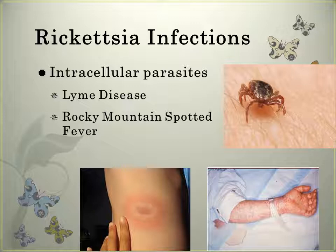Always encourage searching the body for ticks after being in a highly wooded or large grassy area. Rocky Mountain spotted fever has a gradual onset with fever, malaise, anorexia, and myalgia, or an abrupt onset with rapid temperature elevation, chills, vomiting, myalgia, and severe headache. The rash is primarily on the extremities, and you treat it with antibiotics and supportive therapy.